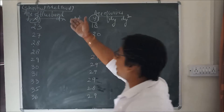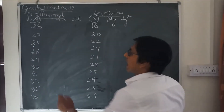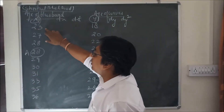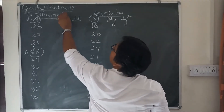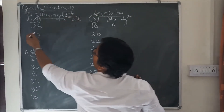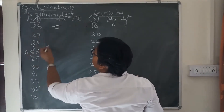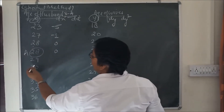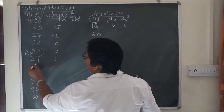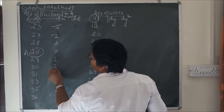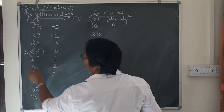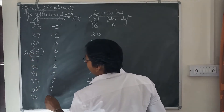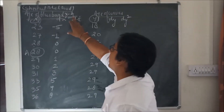Now assume any value from the x series as a. I assume 28 as a. We subtract 28 from all x values to get dx: 23 minus 28 = minus 5; 27 minus 28 = minus 1; 28 minus 28 = 0; 28 minus 28 = 0; 29 minus 28 = 1; 30 minus 28 = 2; 31 minus 28 = 3; 33 minus 28 = 5; 35 minus 28 = 7; 36 minus 28 = 8. This is the calculation of dx, i.e., x minus a.